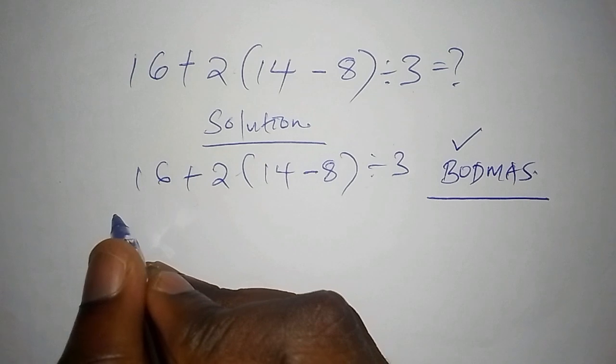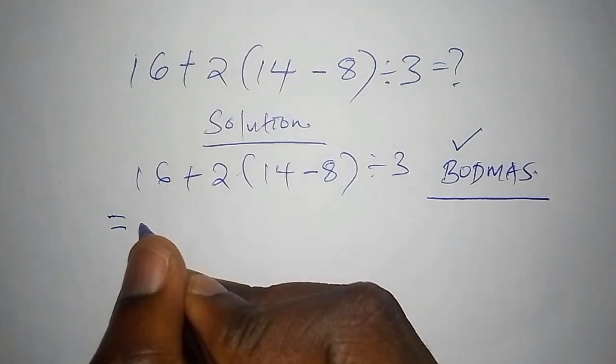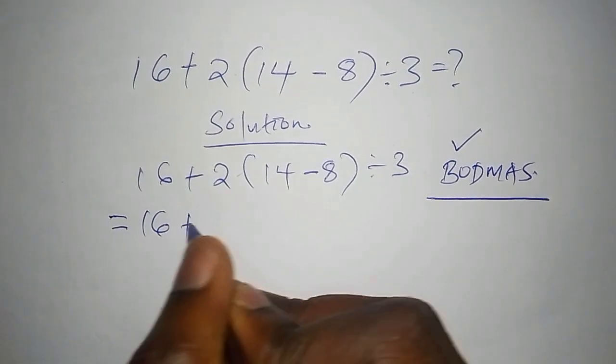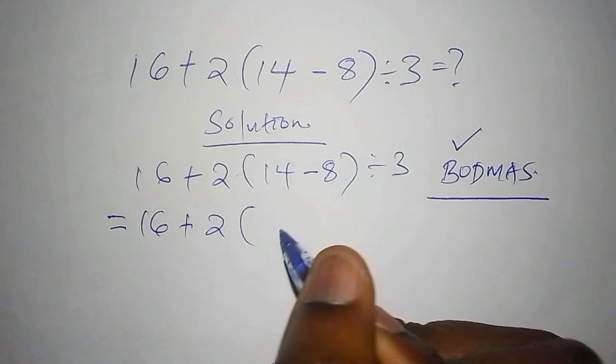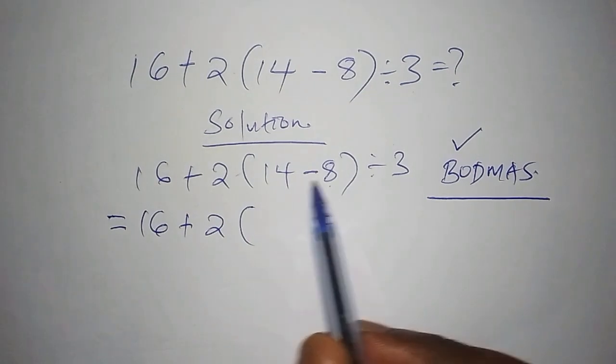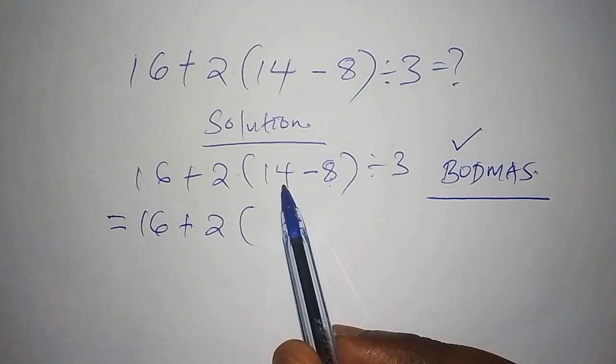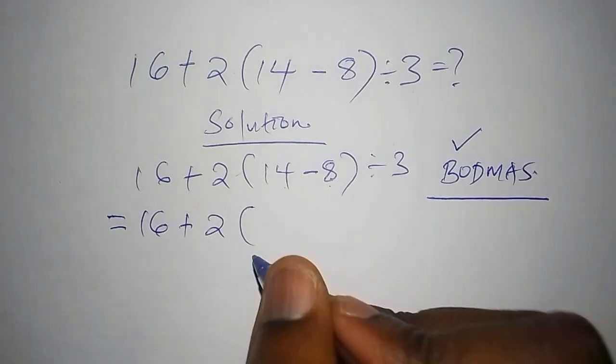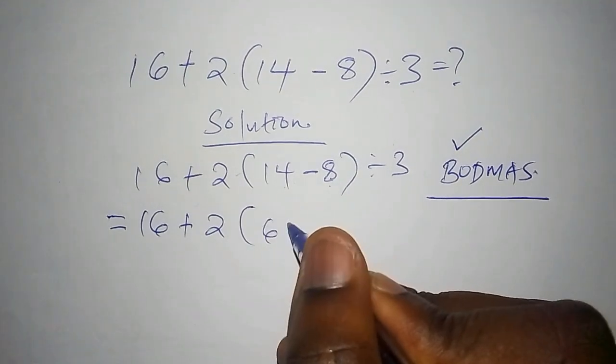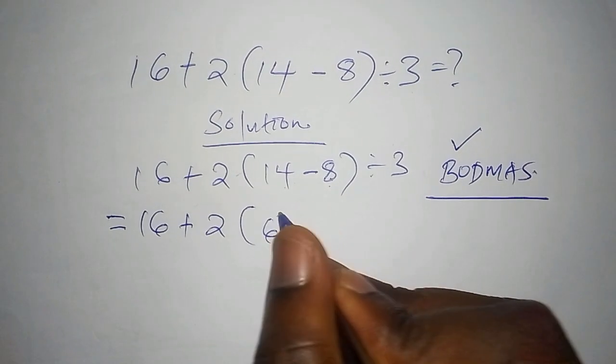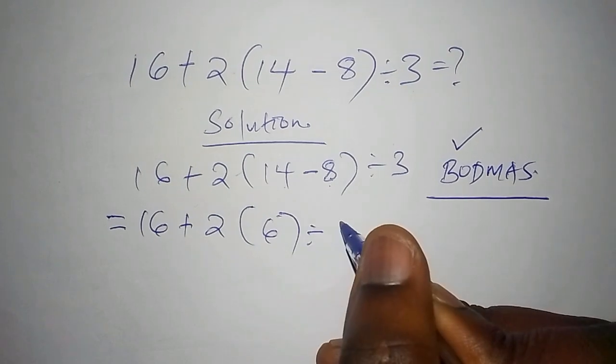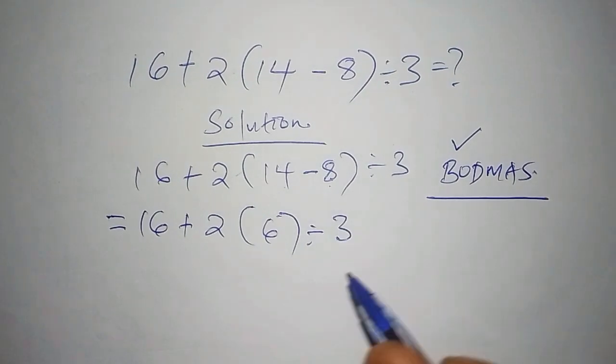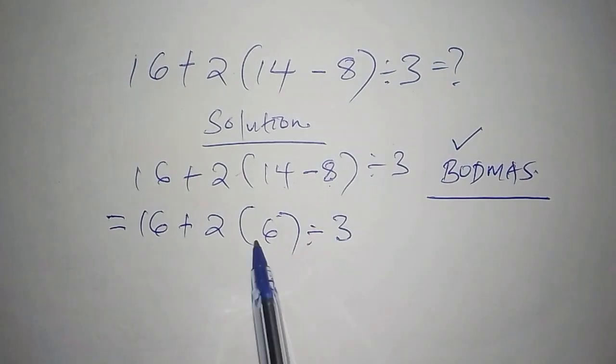We are first going to begin with B, which stands for bracket. The first step is 16 add to 2 then we need to work out the number inside the bracket, that is 14 subtract from 8 which is 6. 14 minus 8 is 6 then we close the bracket divide by 3.